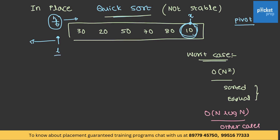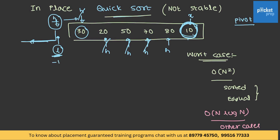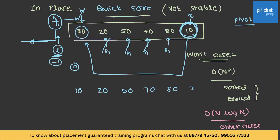Initially, low and high pointers are set up. The high pointer is incremented: 30 is greater than 10, so it is left as-is and high is incremented. 20 is greater than 10 — high is incremented. 50 is greater than 10 — high is incremented. 70 is greater than 10 — high is incremented. 80 is also greater than 10. High has almost reached the pivot. All elements to the left of the low pointer are less than the pivot, so the correct position of the pivot is next to the low pointer (index 0). The pivot 10 moves to the first position, and 30 moves to the last.